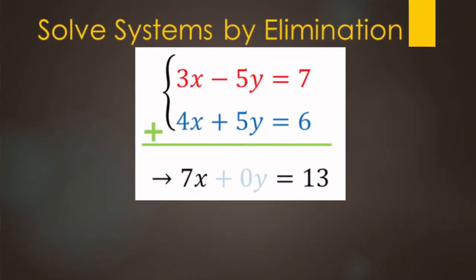When solving by elimination, the main goal is to add straight down to eliminate one of the variables. On some problems, we have to use multiplication first to get the coefficients on either the y's or the x's to be opposites.